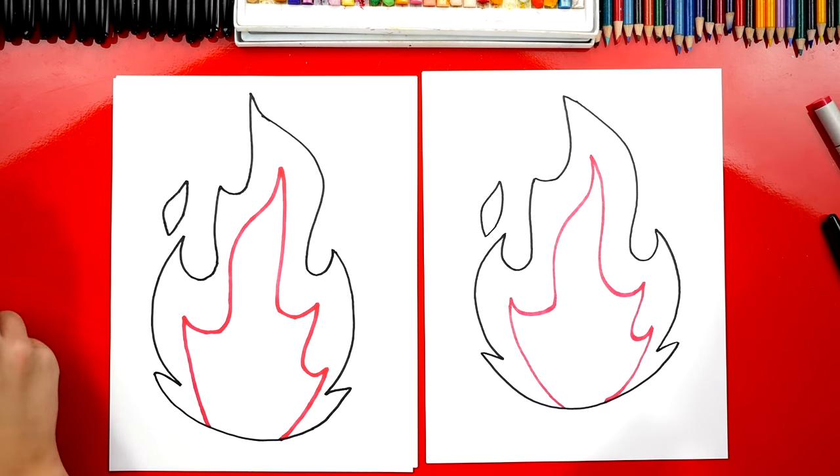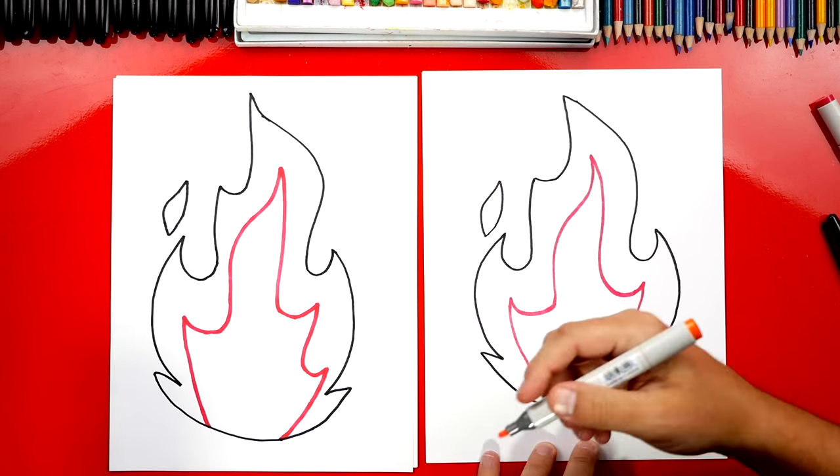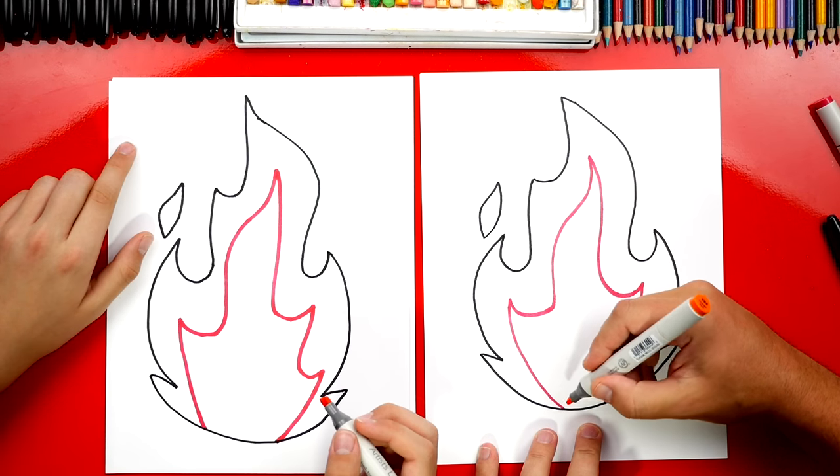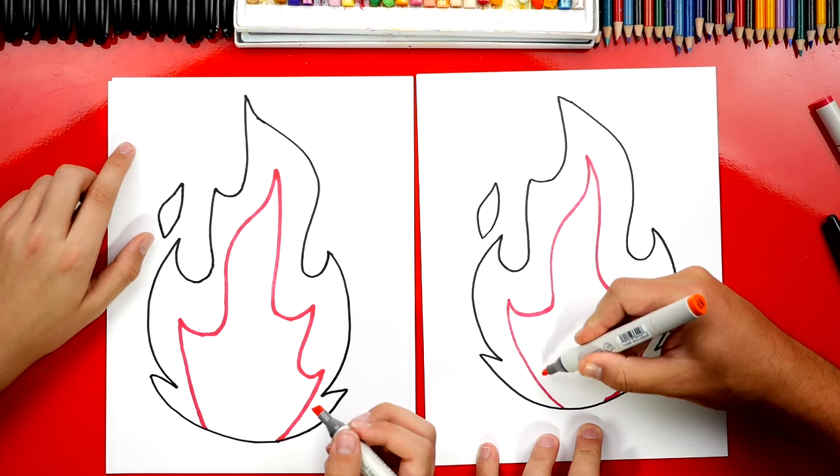Now we're going to switch to our orange and we're going to do the next layer. You have it. We only had one red. We need to buy another red. We have two oranges though. So we'll do this together. We're going to repeat that same shape.